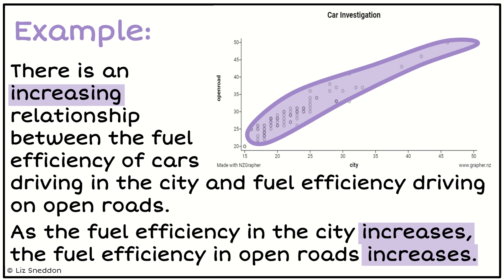To justify it — that's the second sentence — I talk about as the fuel efficiency in the city, because that's on my horizontal axis and that's my explanatory variable, as the fuel efficiency in the city increases, my fuel efficiency on the open road increases. So that's an example of an increasing relationship.